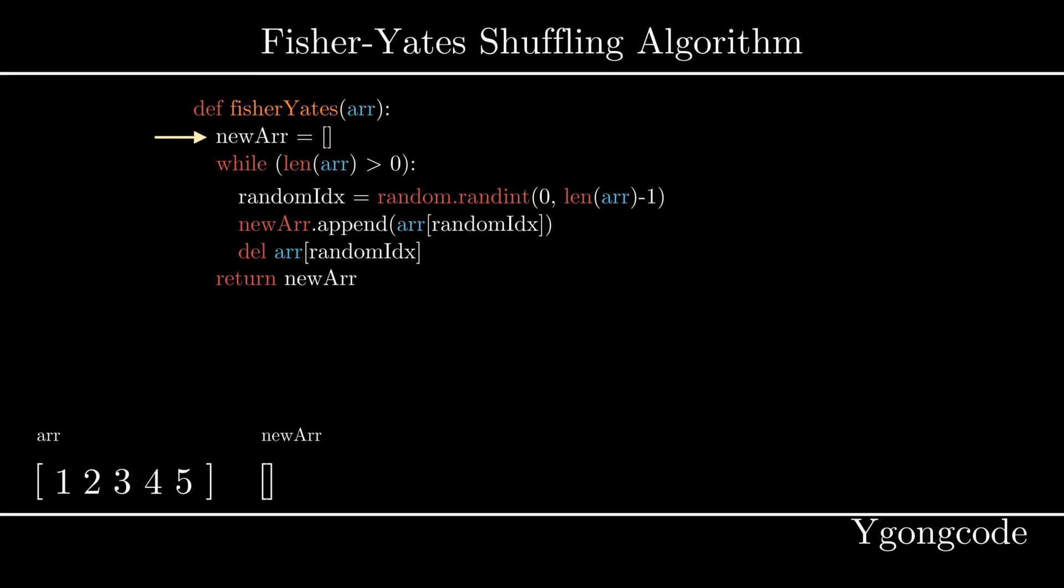First, we initialize a new empty array to store the incoming shuffled elements. While the input array is not empty, we randomly generate an index between 0 and 4 to determine which element we want to add to our shuffled array.